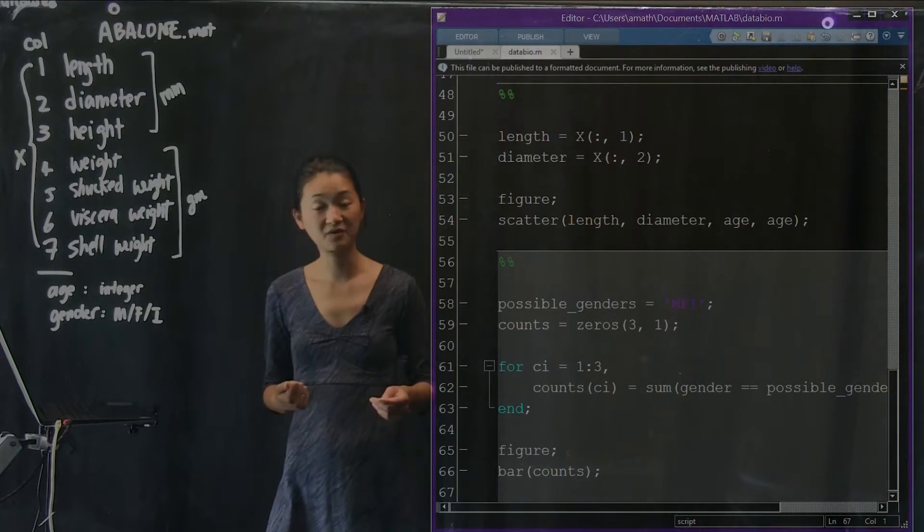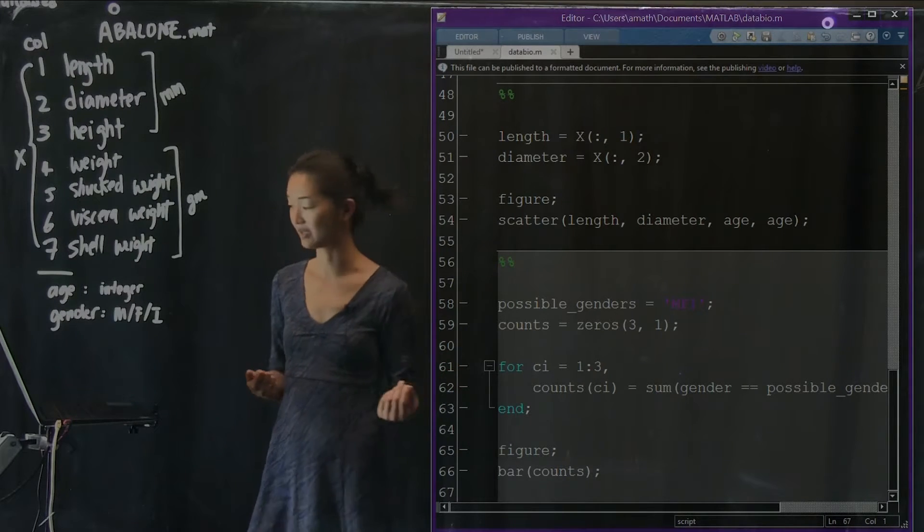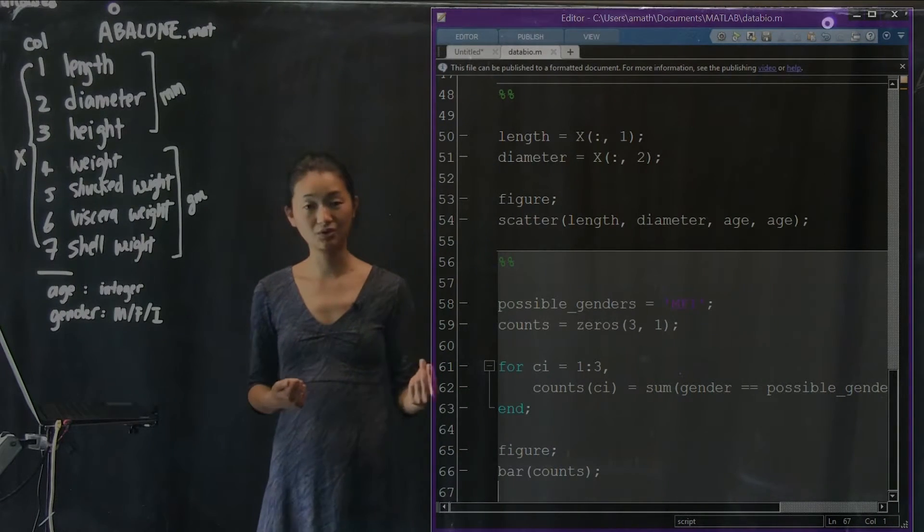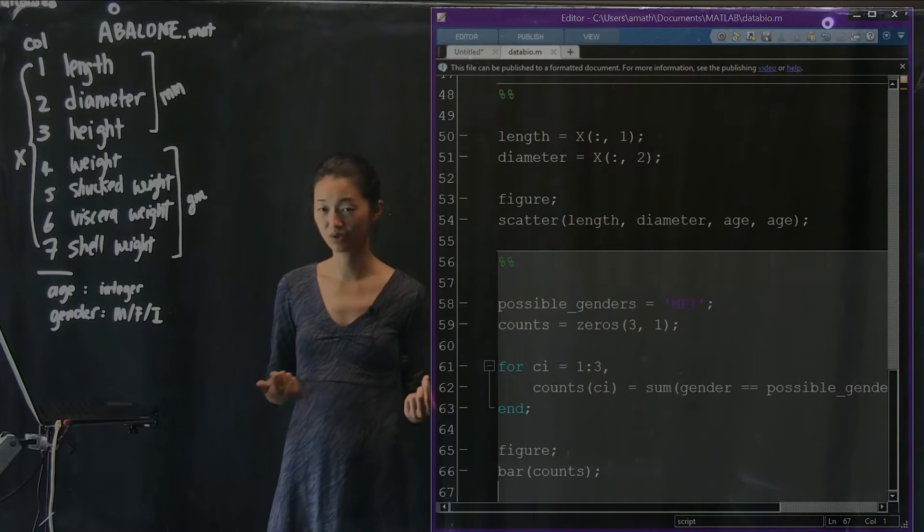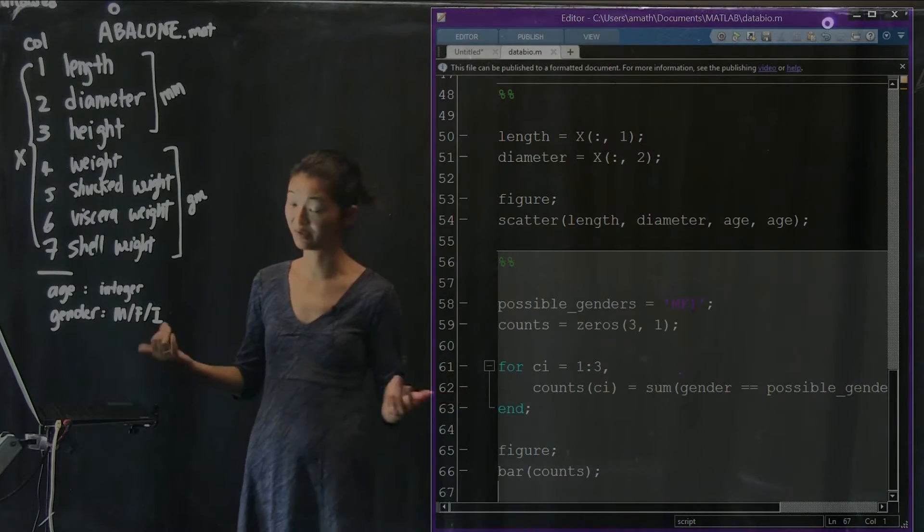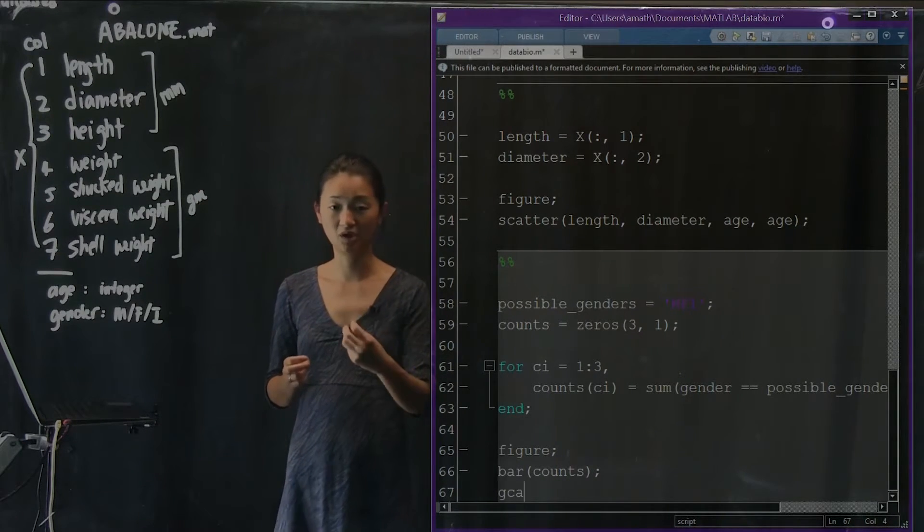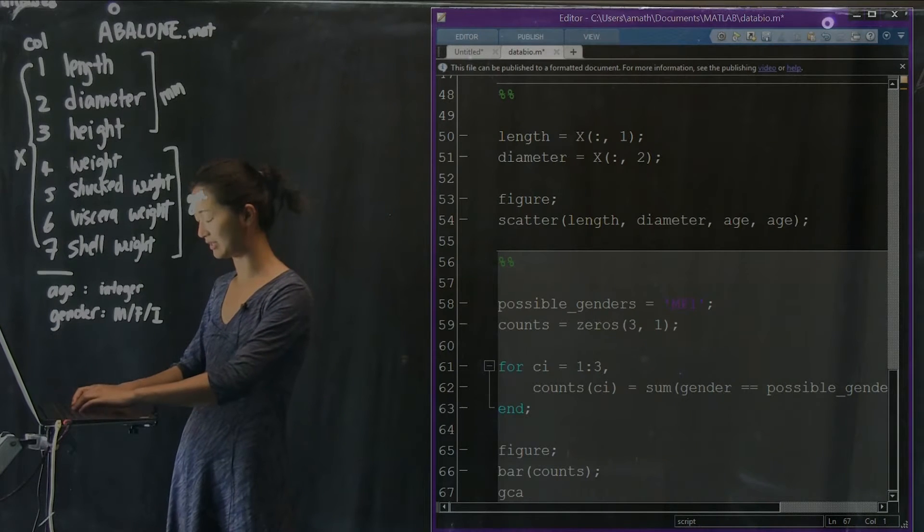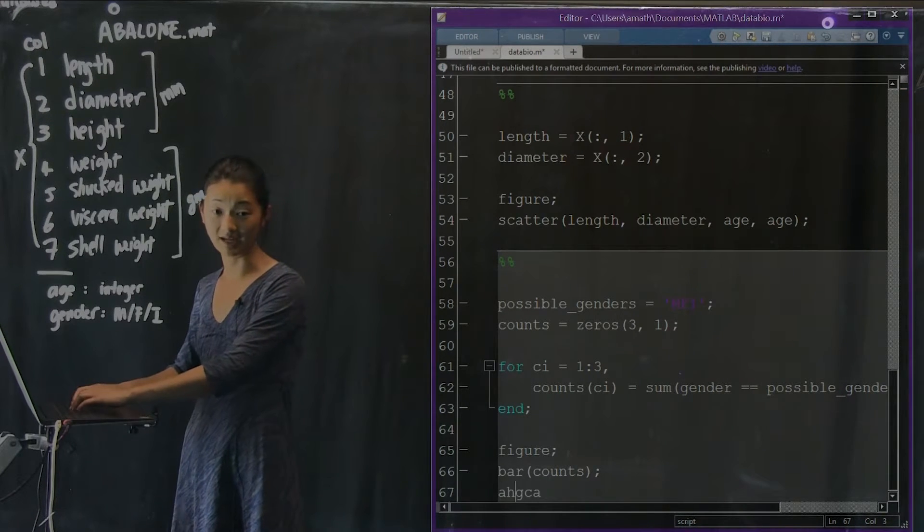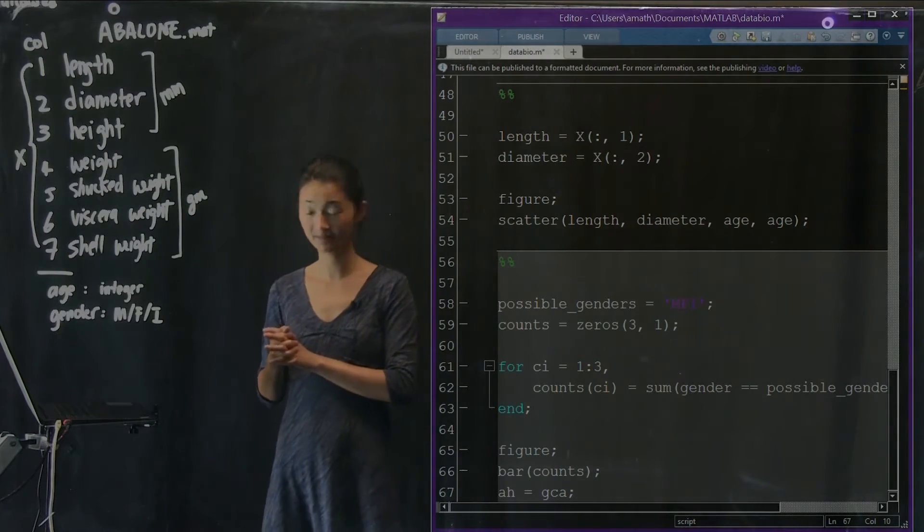First of all, we need a handle on the actual object of the axes. And the shortcut for getting the axes, there's a shortcut in here that I'm just going to tell you once, it's pretty useful, is the GCA command, which gives you the handle of the current axes. So, I'm going to label this the axis handle equals the GCA, which gives me the current axis.